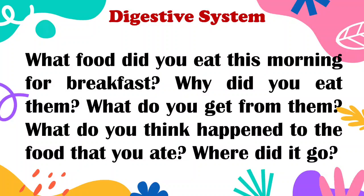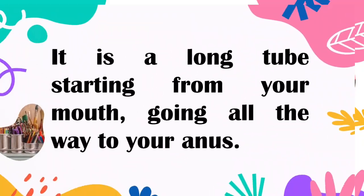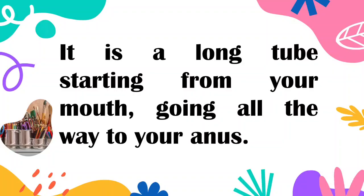What food did you eat this morning for breakfast? Why do you eat them? What do you get from them? What do you think happened to the food that you ate? Where did it go? Remember that the digestive system breaks down food and absorbs nutrients for energy and growth. It is a long tube starting from your mouth going all the way to your anus.